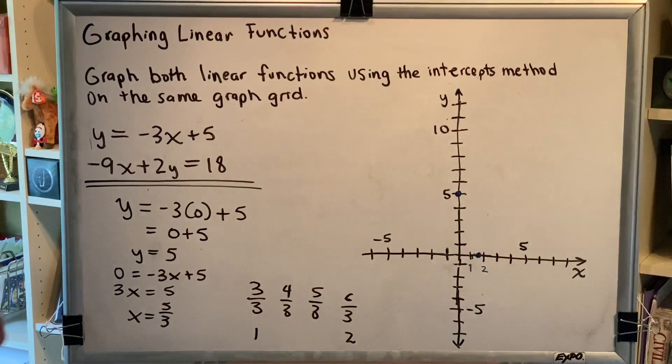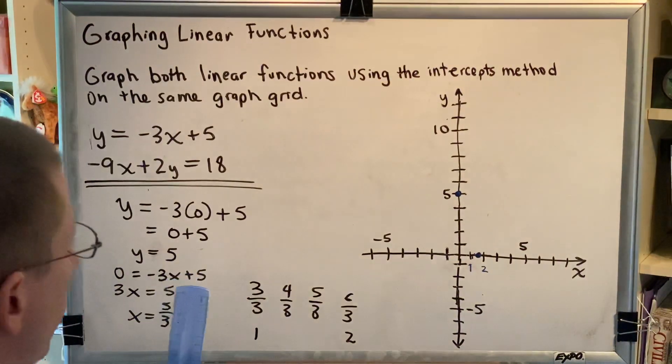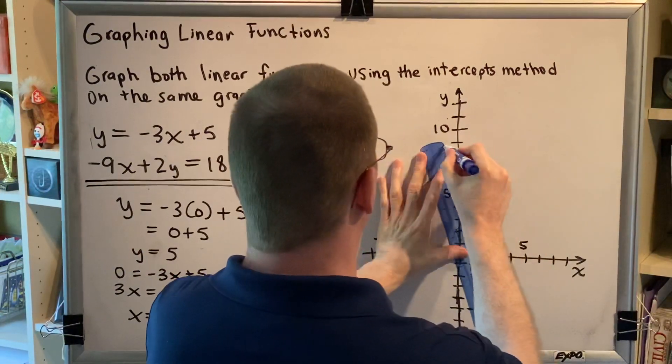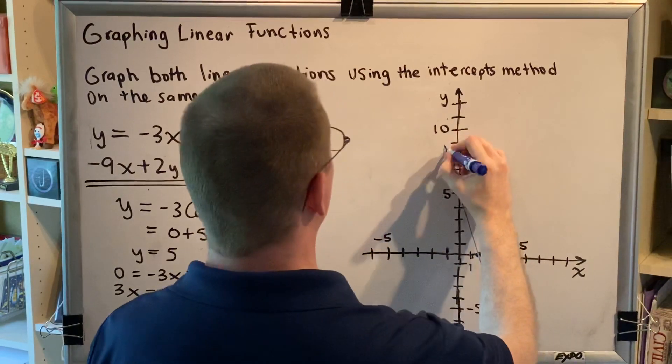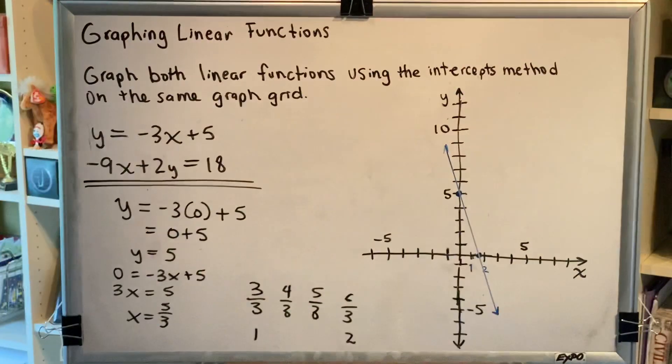Once you have your two points, then you reach for your straight edge and you connect those two points using your straight edge. And there we go. We've graphed our line. We're now going to repeat this for the other equation.